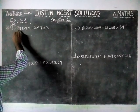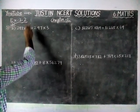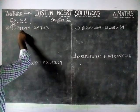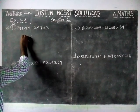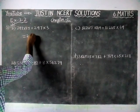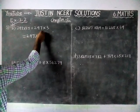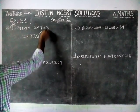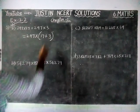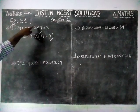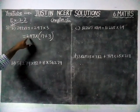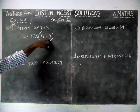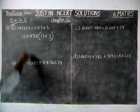Now, in this sum, 297 into 17 plus 297 into 3. Here, 297 is common in both the numbers. So, we are going to take 297 as a common number, and the remaining numbers are 17 plus 3. This is in the form of A into B plus A into C, which equals A into (B plus C) — the distributive property of multiplication over addition.